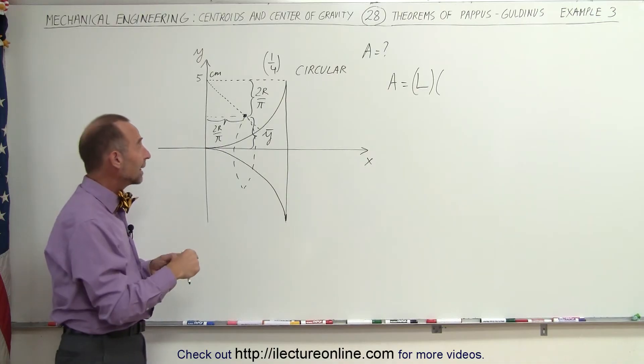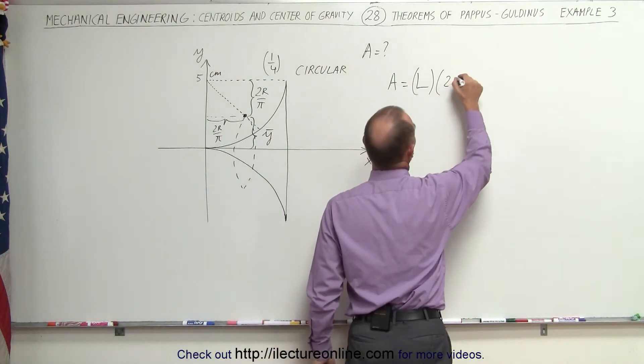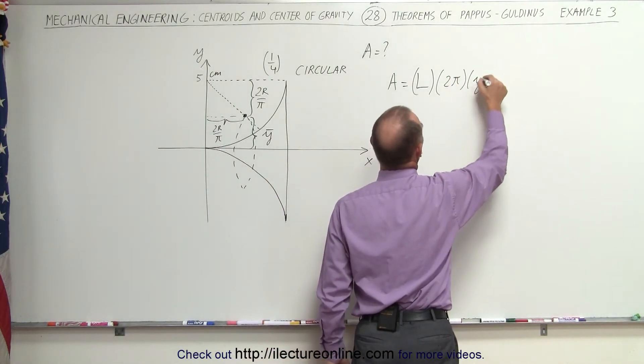The length of a circle is 2π times the radius. In this case the radius is the y-coordinate of the centroid. 2π times the y-coordinate of the centroid.